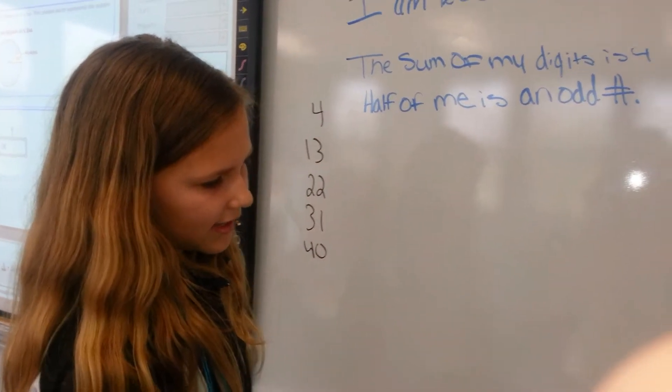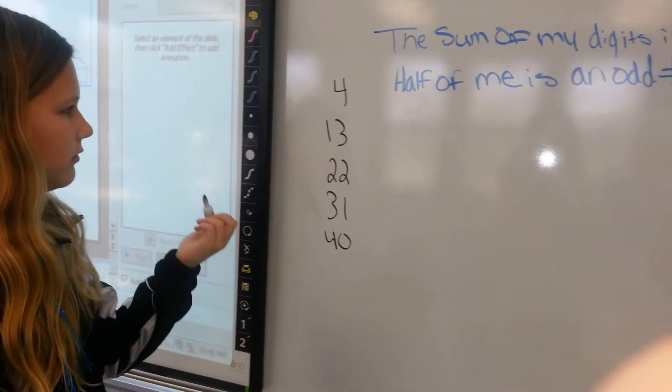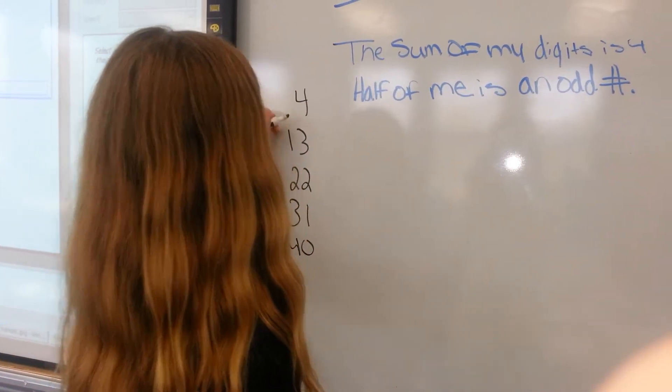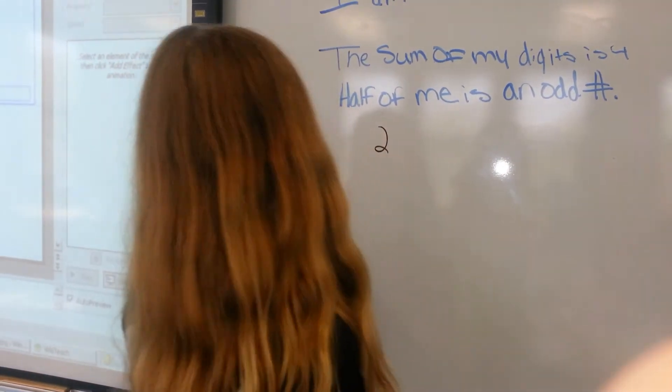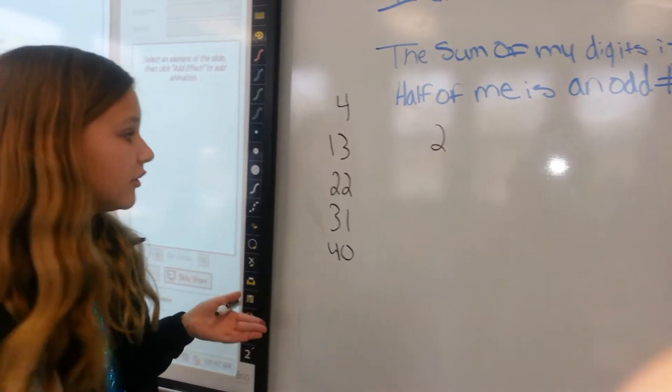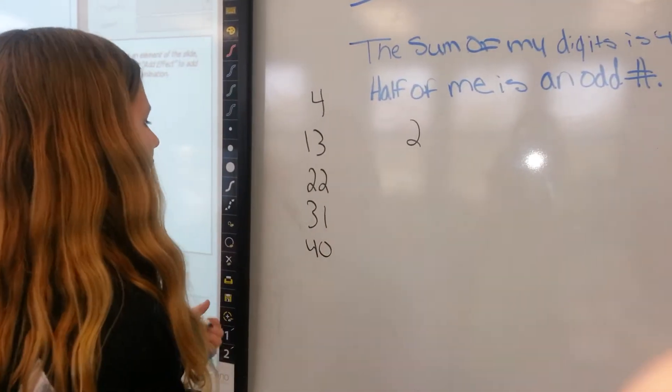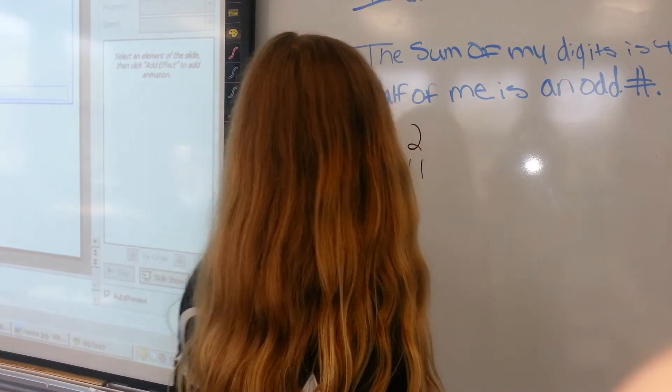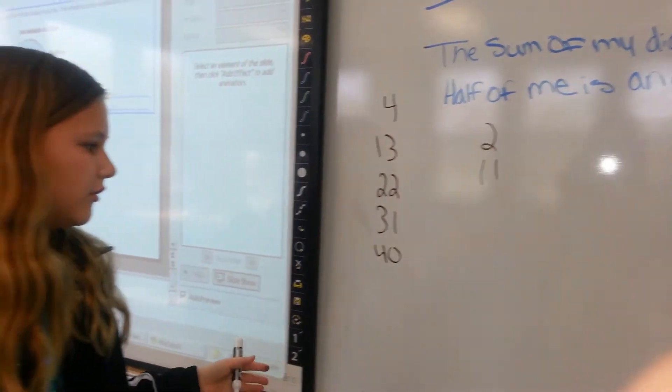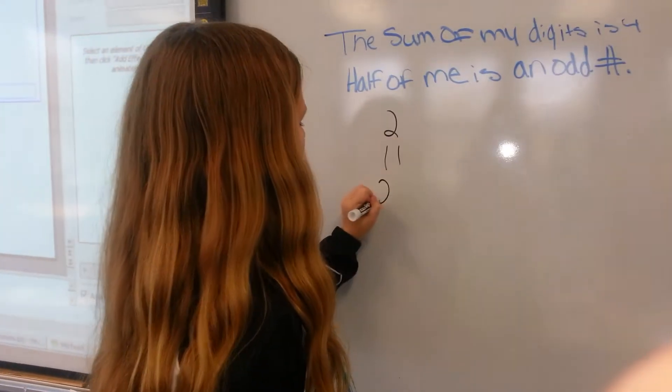And then it says half of me is an odd number. So, half of 4 is 2, half of 13 you can't do, so we just take that out. Half of 22 is 11, half of 31 we can't do, half of 40 is 20.